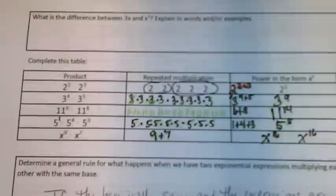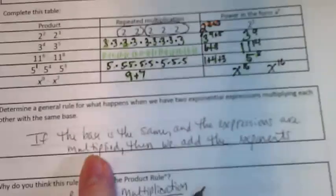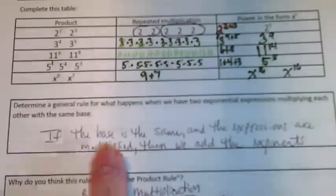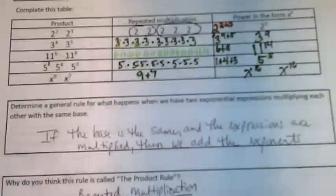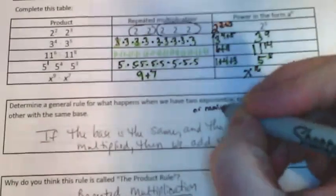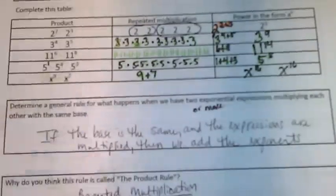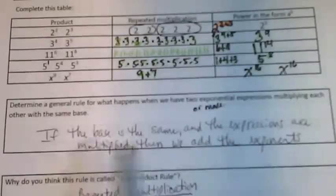The idea with this is then you're going to try to put into words what you've just discovered up here. This is how I put it for this example: determine a general rule for what happens when we have two exponential expressions multiplying each other with the same base. Okay, that's what's going on up here. I should say two or more expressions, because on this one we had three and we were able to make this happen. But what is the rule? I wrote: if the base is the same and the expressions are multiplied, then we add the exponents.